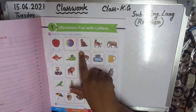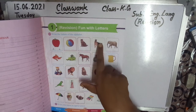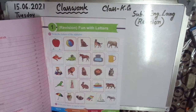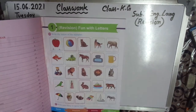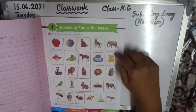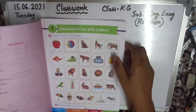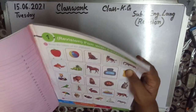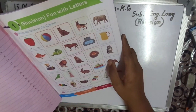C — capital C, small c. D for Dog — capital D, small d. Elephant — capital E, small e. Fish — capital F, small f.